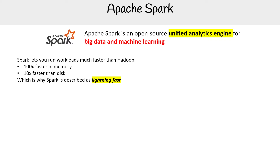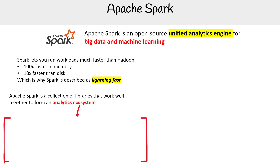When it says Hadoop, it's talking about Hive and Pig and the other things that usually come along with Hadoop. Apache Spark is a collection of libraries that work well together to form an analytics ecosystem.